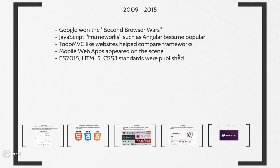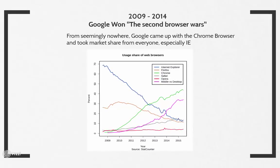That brings us to the 2009 to 2015 time frame. 2009 was the peak of the second browser wars, with Internet Explorer, Firefox, and Safari all enhancing the performance of their JavaScript engines to win over developers. But from seemingly nowhere, Google came up with the Chrome browser and took market share from everyone, especially Internet Explorer. Along the way, it almost killed off Firefox.